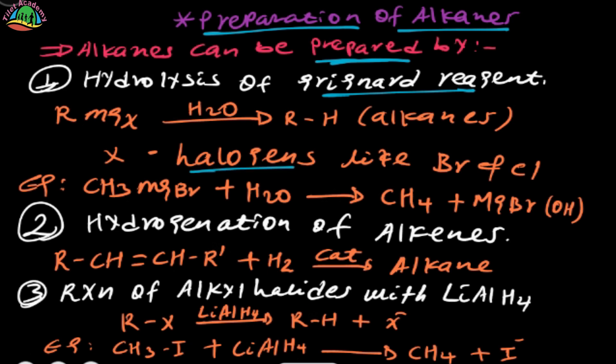The halogen includes bromine, chlorine, iodine, and fluorine — this is a halogen. So, the Alkyl group can be combined with magnesium halide, and hydrolysis gives an alkene.